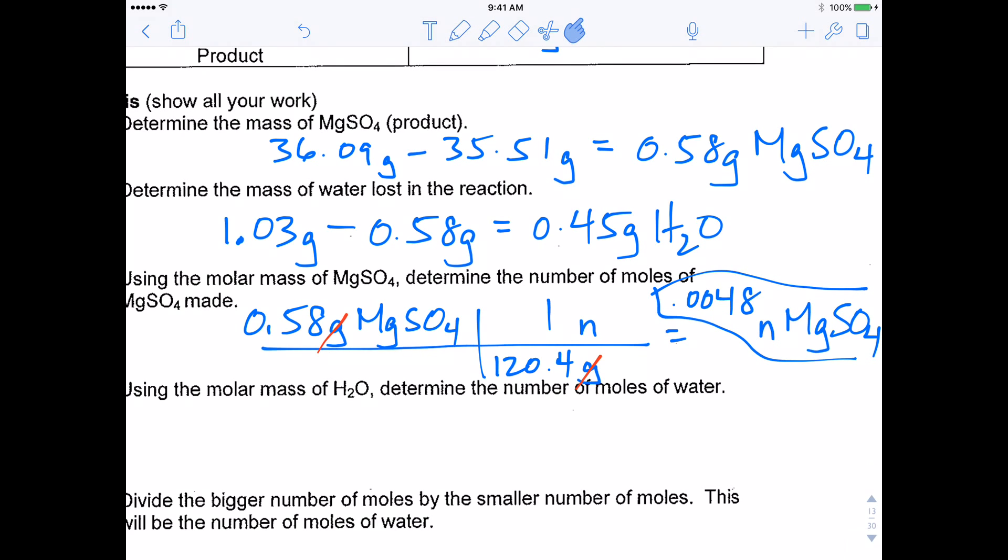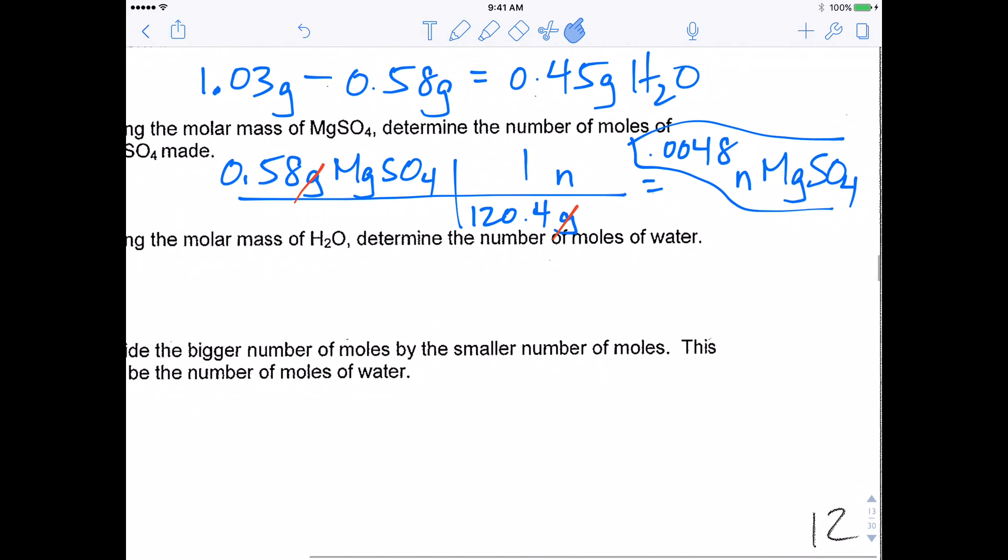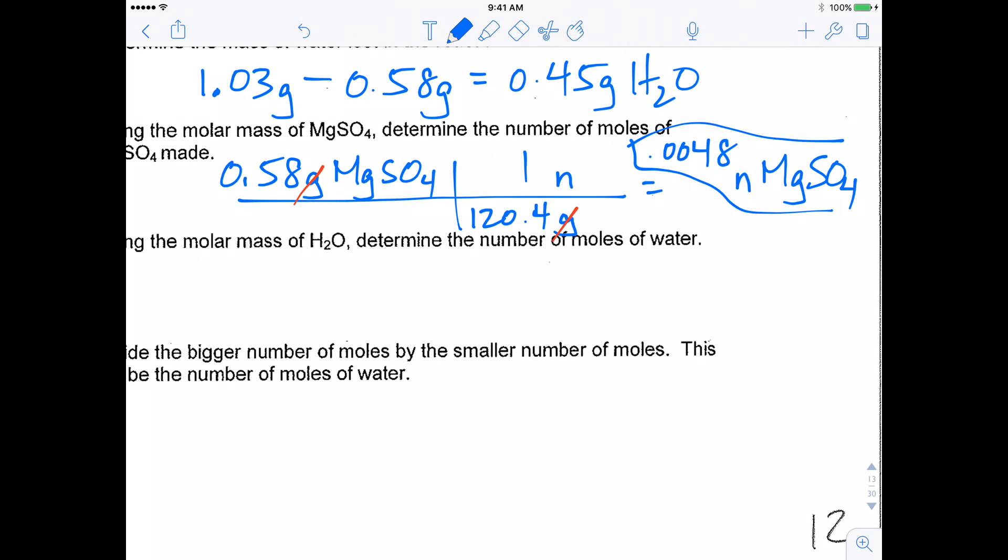We're going to do the same thing for water now. So I started out with, or we determined we had 0.45 grams of water that were in our original sample based on our calculations. And I want to know how many moles of water we made. I'm going to put grams of water on the bottom so these units cancel. Moles of water on top. For every one mole of water, it will weigh 18 grams. And doing the calculations, 0.45 times 1 divided by 18, we get 0.025 moles.